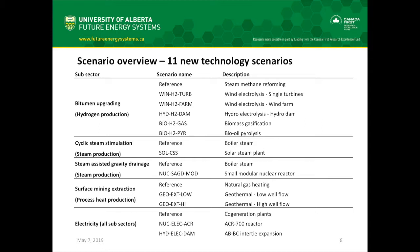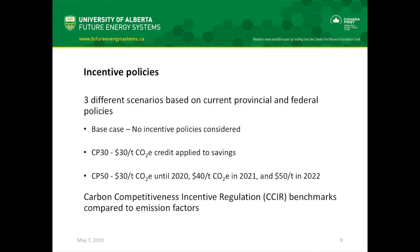In bitumen upgrading, we have different forms of producing hydrogen — either through electrolysis using renewable energy technologies or through biomass conversion processes. In in situ, we have solar steam or nuclear-generated steam. For surface mining, we're looking at incorporating geothermal energy. In electricity, we're looking at both nuclear electricity and hydroelectricity dedicated to oil sands production. We also evaluate each technology based on different incentive policies.